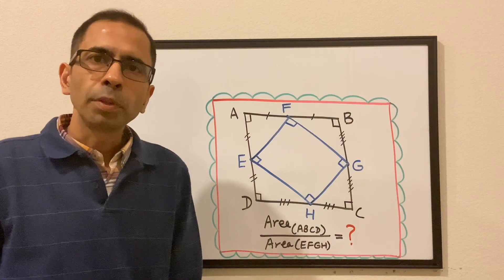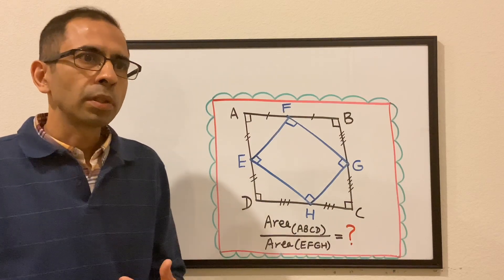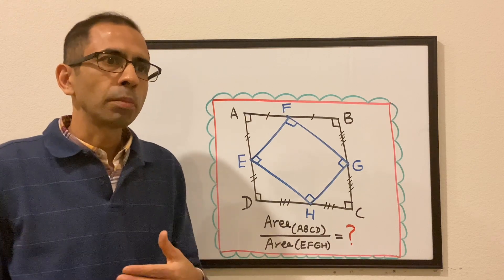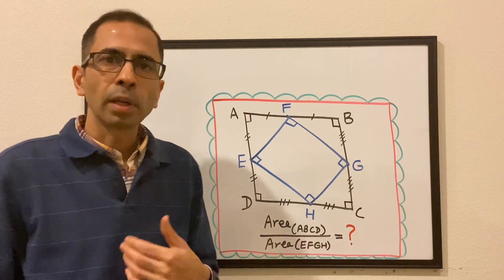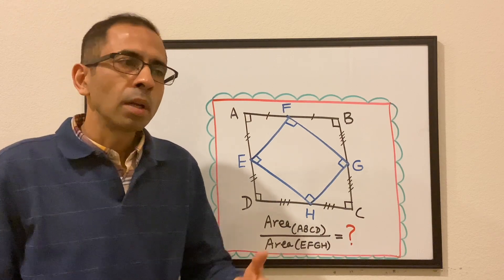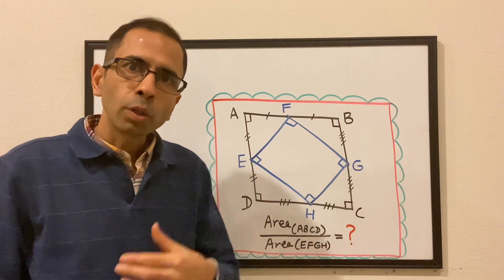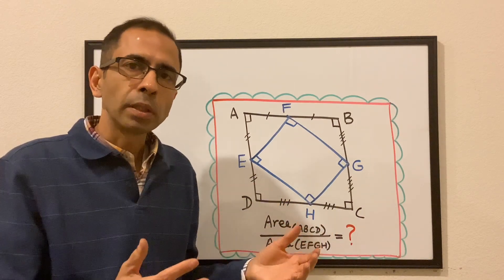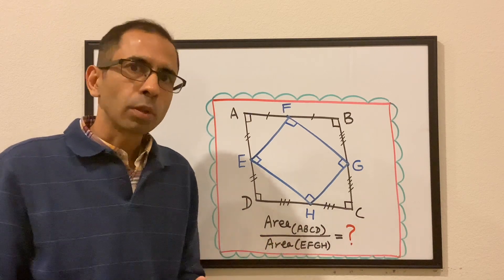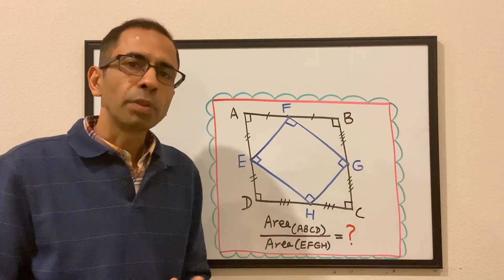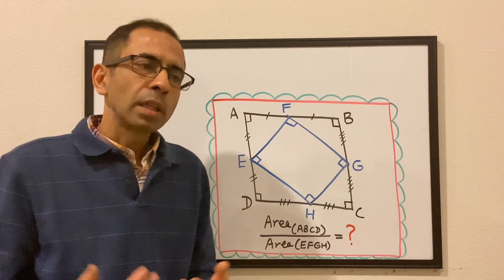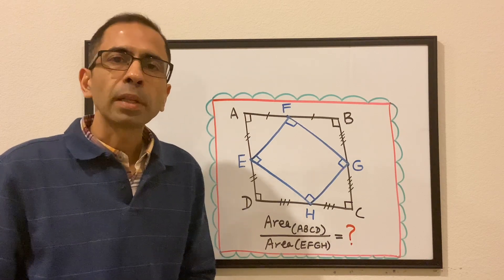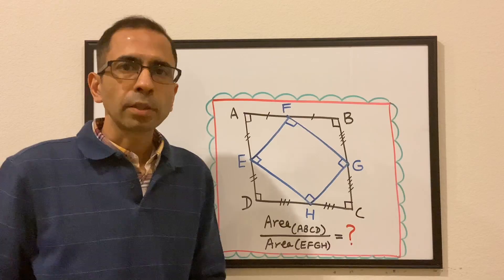Hopefully you liked the video and it gave you a good perspective on how to deal with ratios. These ratios can be in terms of algebra or geometry or whatever — whenever we are trying to find the ratio of two entities, we don't necessarily need to know their actual values. We can assume any variable or any value and things will cancel out. Keep practicing, and if you have any questions please feel free to reach out at info.mathleaps.gmail.com. See you in the next session.